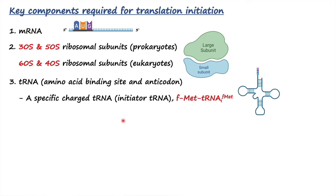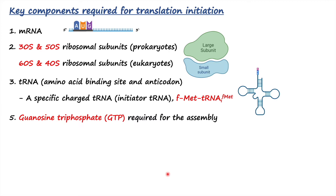Most importantly for translation initiation, we require a specific type of transfer RNA called the charged or initiator transfer RNA. This initiator tRNA carries methionine, which is modified to formyl-methionine by adding a formyl group to the methionine. The 'i' here signifies initiation, which is why it is called initiator transfer RNA.